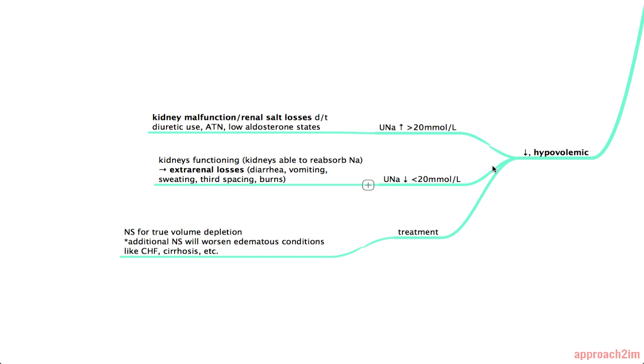In the case when the kidneys are working well and they're reabsorbing sodium, your urine sodium should be low or less than 20. And this means your hyponatremia has to be due to things other than the kidney. So extra-renal losses.